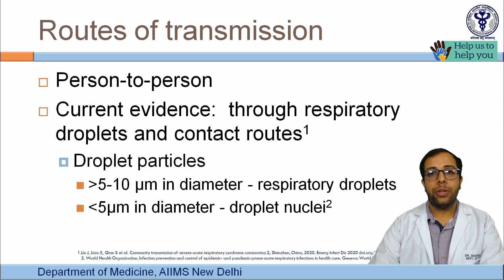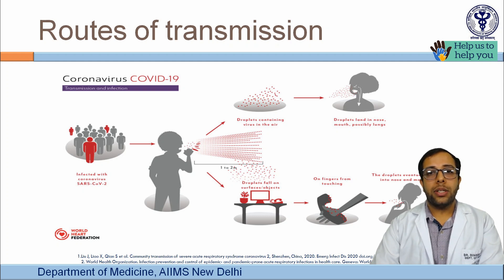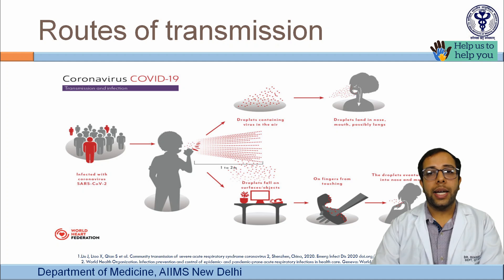Multiple lines of evidence show that the predominant mode of transmission is through droplets. For respiratory tract infections, spread can occur via respiratory droplets or droplet nuclei, which differ in size — particles less than 5 micrometers are droplet nuclei. An infected person's respiratory droplets can directly enter a healthy person's respiratory tract or mucosal surfaces, or indirectly spread via fomites and inanimate objects within one to two meters.